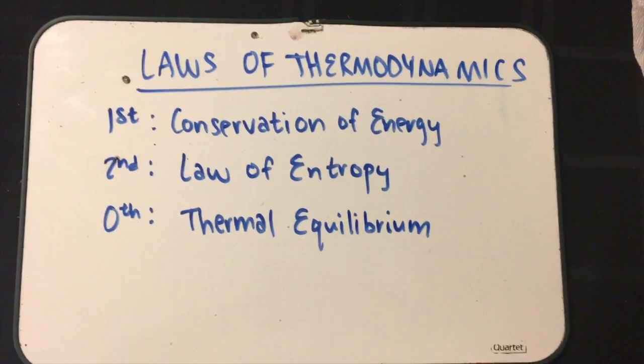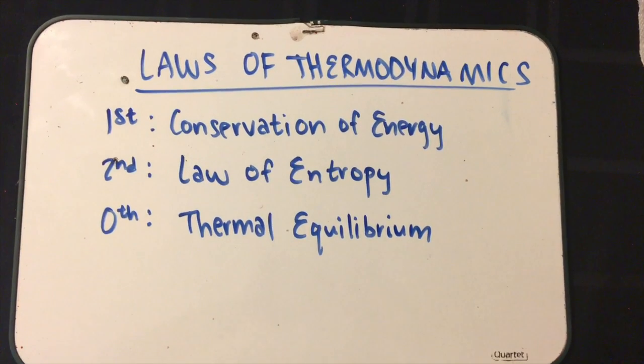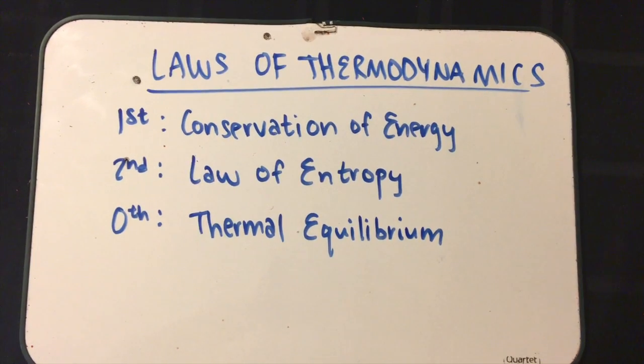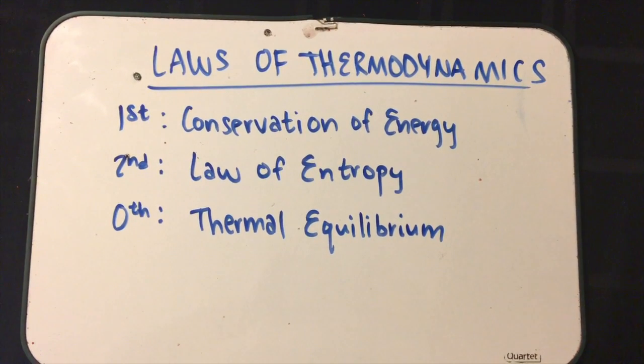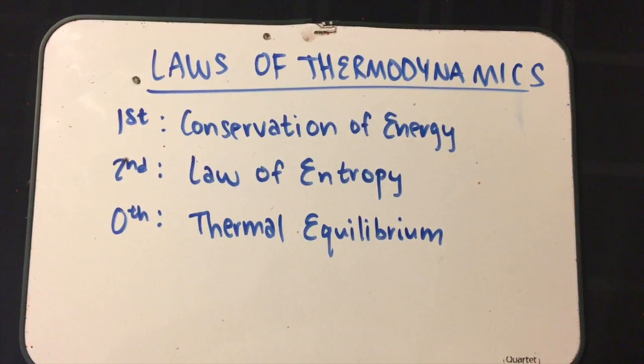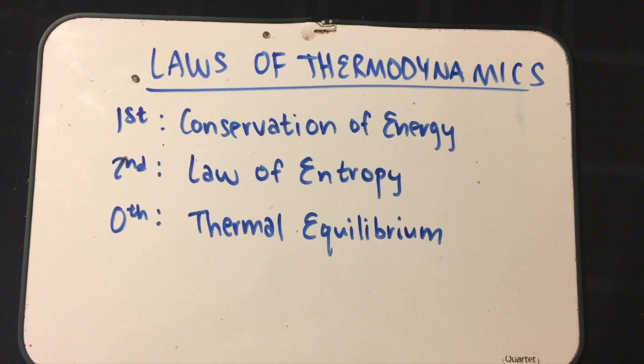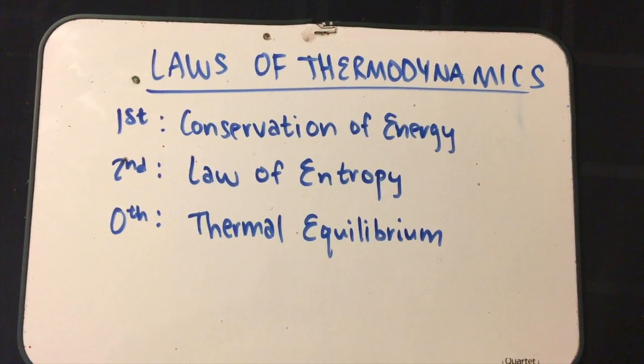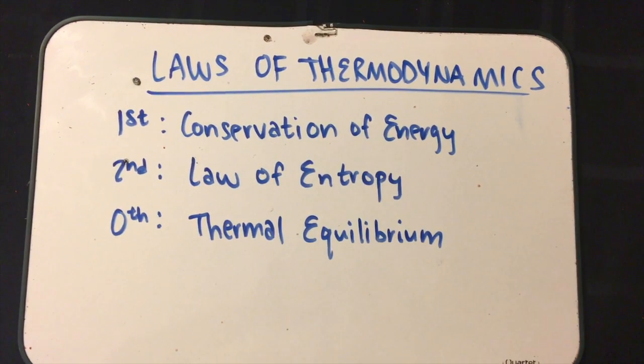And here's our zeroth law, which is thermal equilibrium, which basically states that if A is in thermal equilibrium with B, and B is in thermal equilibrium with C, then A is in thermal equilibrium with C. But hey, what's thermal equilibrium, you ask? Well, in order to find that out, you'll have to stay tuned in this tea-making saga and find exactly what it is we're trying to achieve.